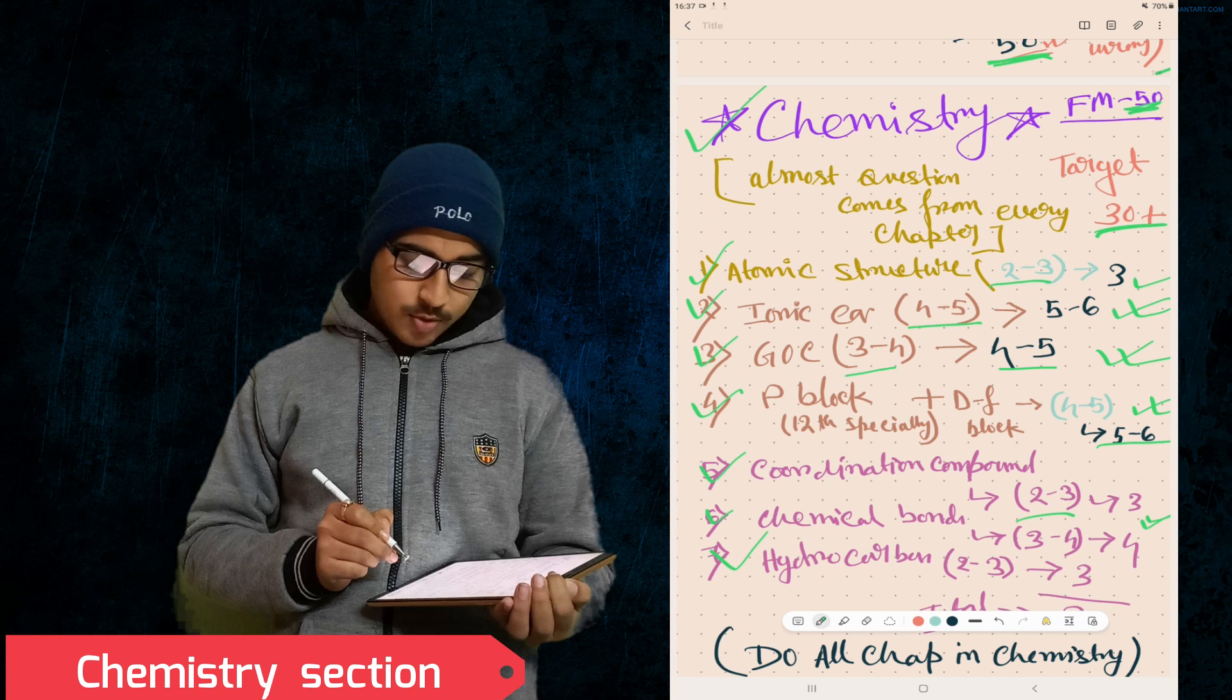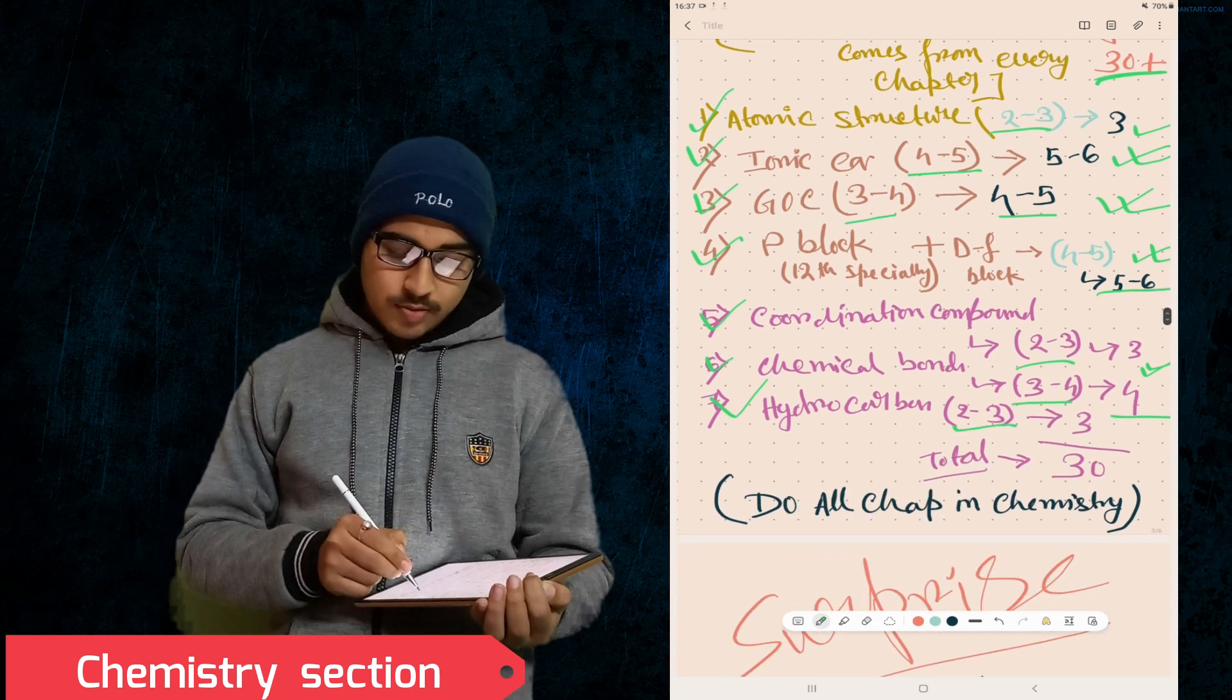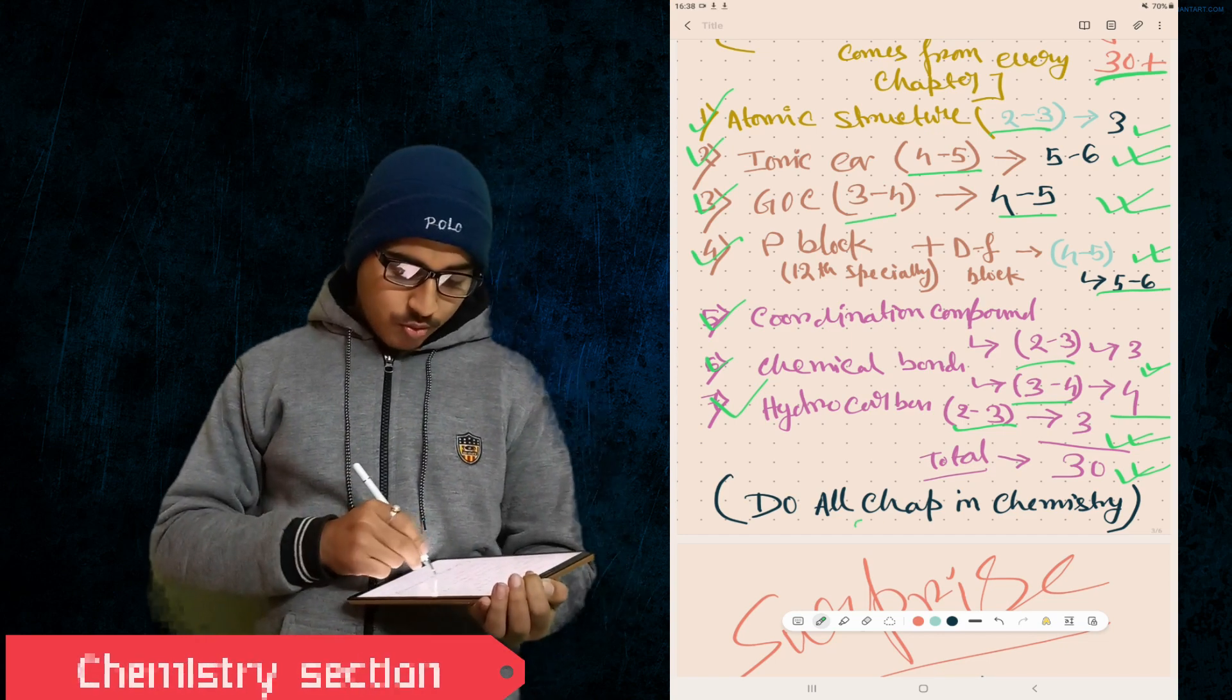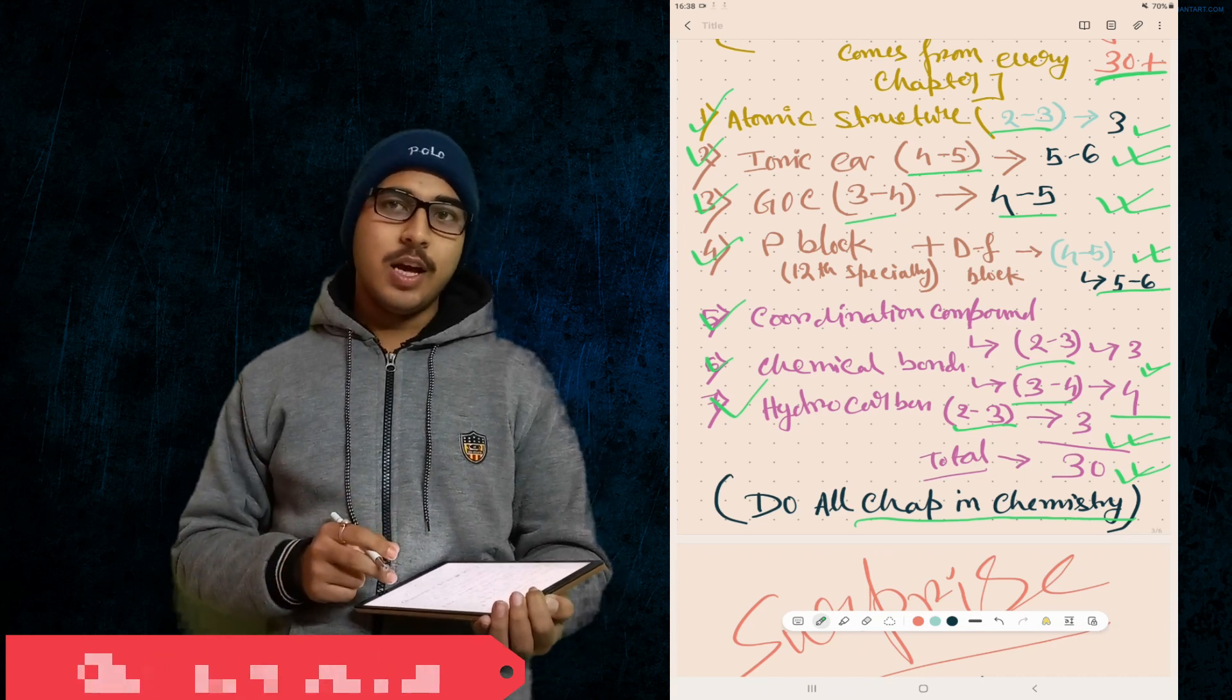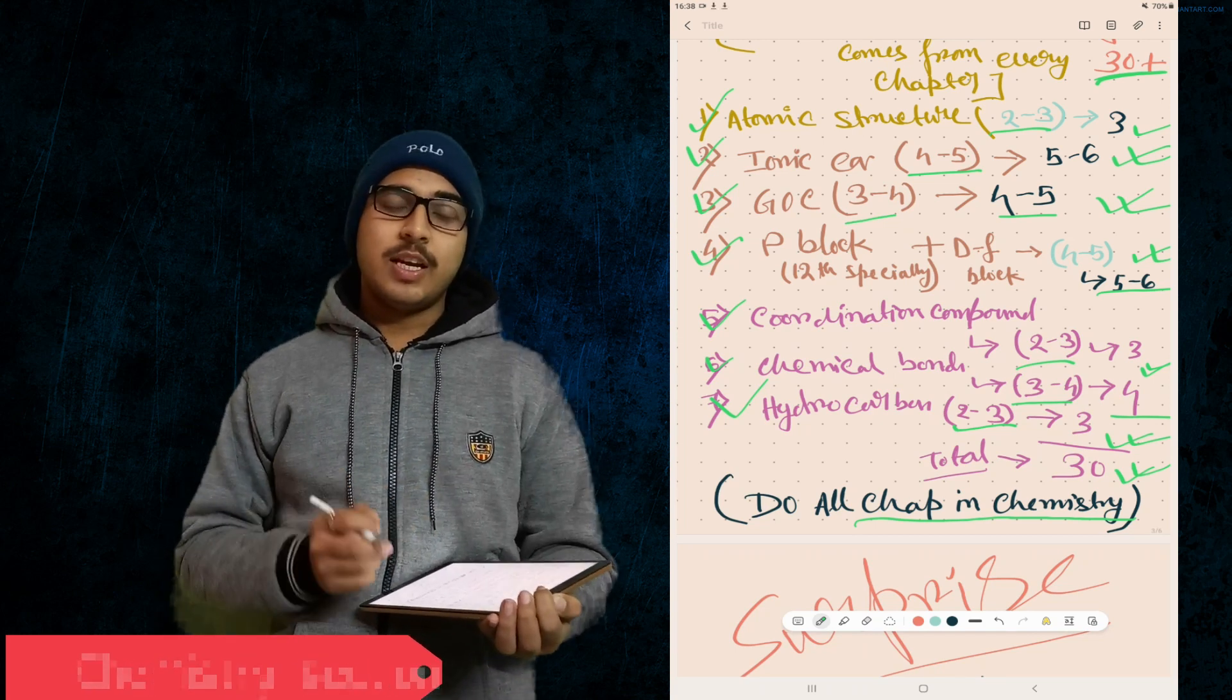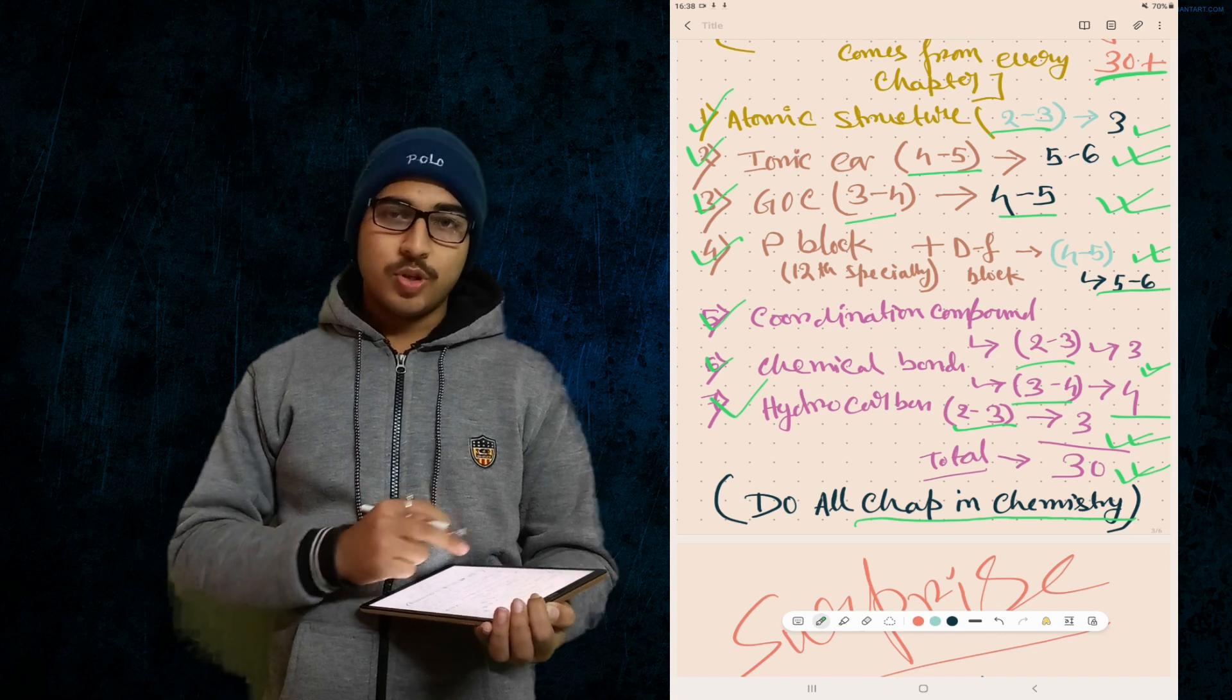Coordination Compounds - two to three questions, three marks. Chemical Bonding - three to four questions, around four marks. Hydrocarbon - two to three questions, three marks. By this calculation you get 30 plus marks. But remember, do all chapters in Chemistry. You have to do every chapter as you can't skip any. If any chapter is not in this list, WBJE Board may pick another chapter and you'll be in trouble. So in Chemistry, do all chapters, especially Class 12.